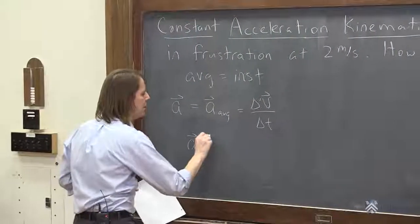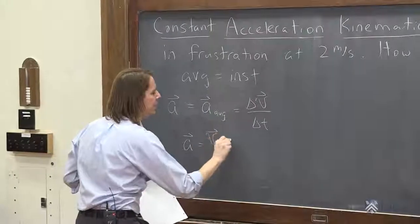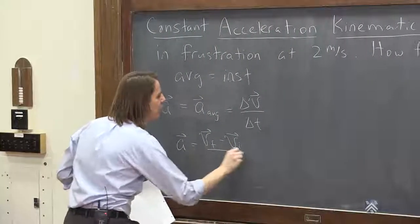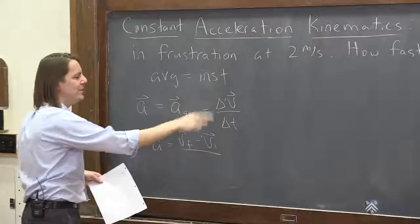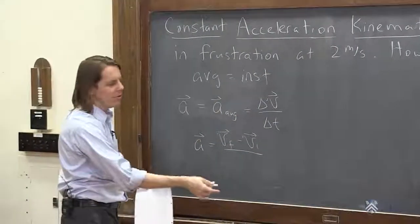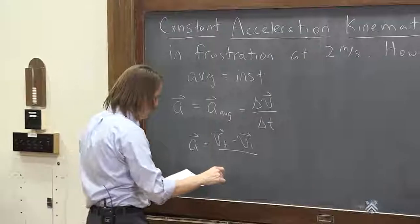So we're going to say a equals the final velocity minus the initial velocity over delta t. And remember, delta t was t final minus t initial. t initial is usually 0, t final we just call it t. So we can say over t.